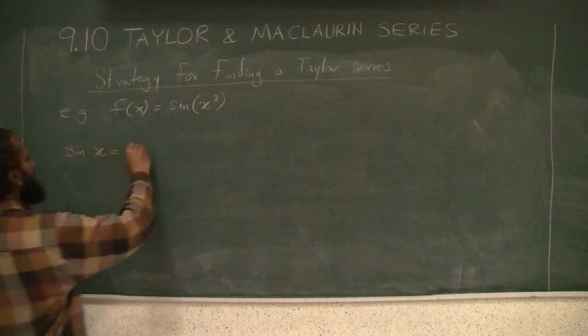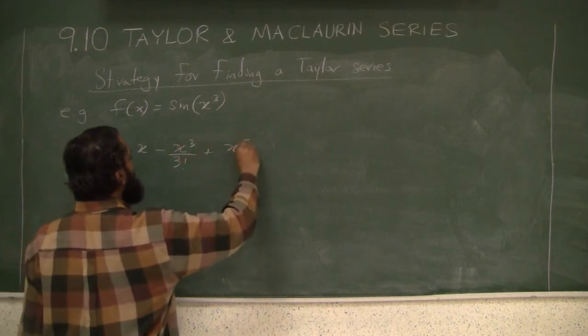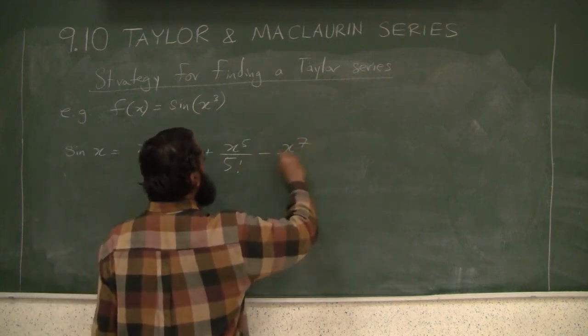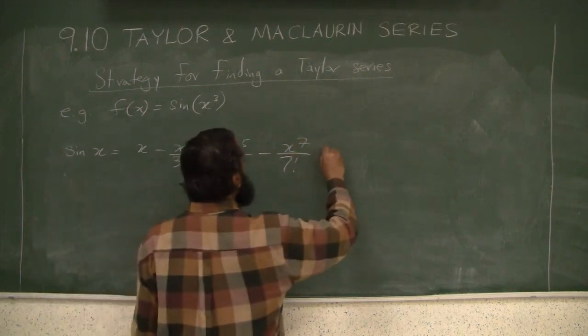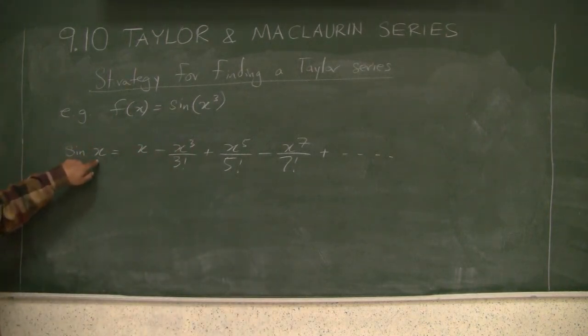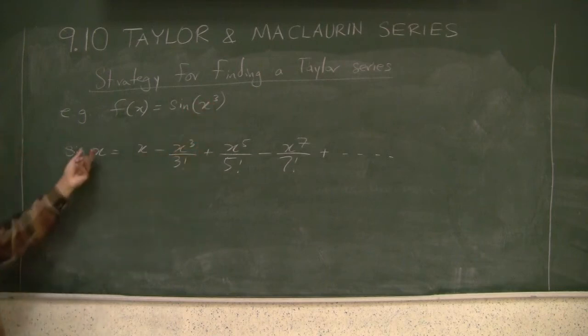We already know that sin(x) = x - x³/3! + x⁵/5! - x⁷/7! and so on. This is sin(x). This is the composition of the sine function with the cubic function. We can plug x³ in here.